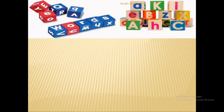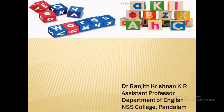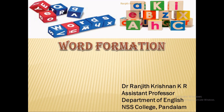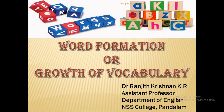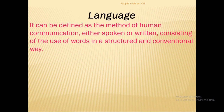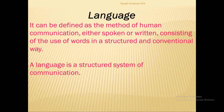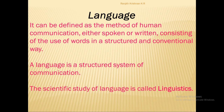Hello dears. Today we'll be discussing one of the important topics of the paper History of English Language, and the topic is word formation, also known as the growth of vocabulary. Before we discuss the topic, let us try to define what language is. Language is often defined as the method of human communication — either in written or spoken format with the use of words in a structured and conventional way. That means every language has a system; it is a structured system of communication, and the study of language is known as linguistics.